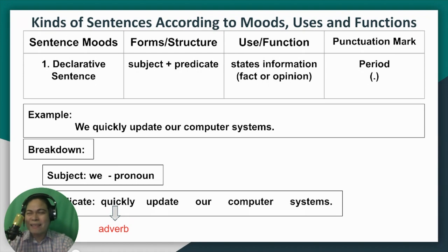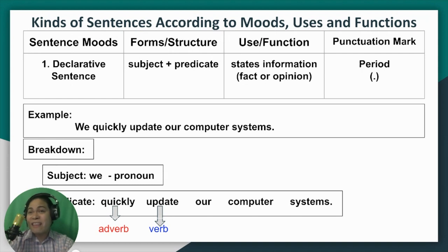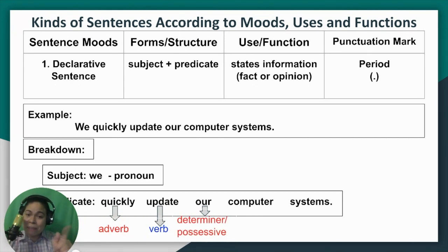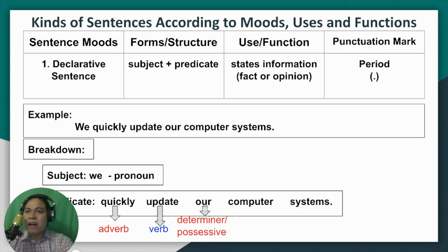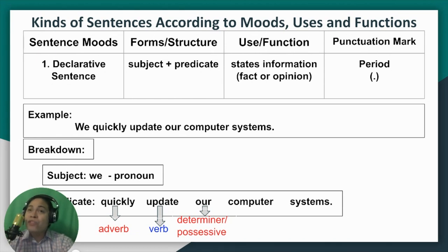"Quickly" is an adverb — specifically an adverb of manner, because it ends in -ly. "Update" is our verb because it tells an action. "Our" is a determiner — a possessive determiner. There are different kinds of determiners: article determiners such as a, an, and the; numerical determiners like one, two, three; indefinite determiners like some, few, and each; and relative determiners like that, those, and these.